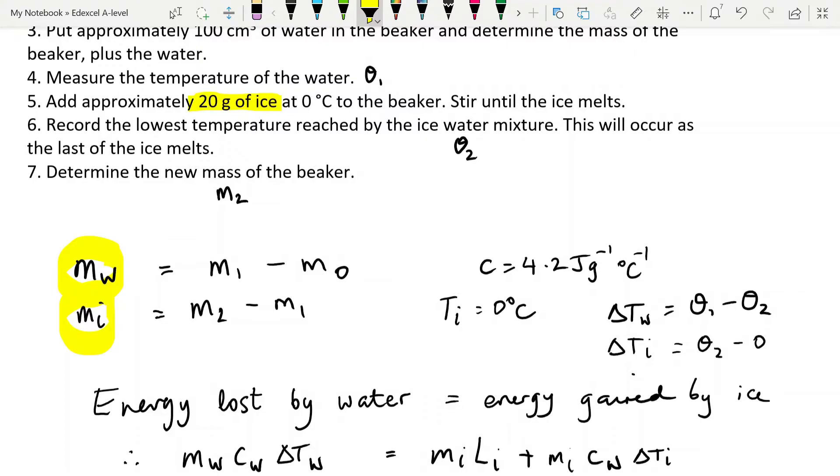There are some other things that we need to know. The specific heat capacity of water is 4.2 joules per gram. We also know that the temperature of the ice was zero degrees to start with. And so the change in temperature of the water then is going to be your original temperature of the water that we called theta 1 minus the second temperature of the water after the ice had melted in it. And the change in temperature of the ice then is going to be our theta 2, the temperature at the end, minus zero.